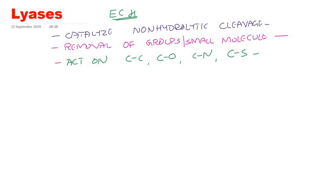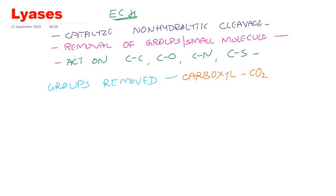What are the groups removed by lyases? They may remove a carboxyl group — the carboxyl group of the substrate is removed as carbon dioxide. Usually these enzymes are called decarboxylase or carboxylase. Please note there is a hyphen after 'carboxylase' — the systematic name is carboxylase-lyase. There are many examples.